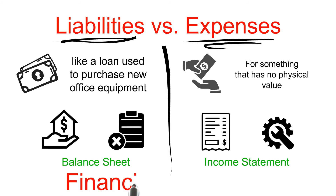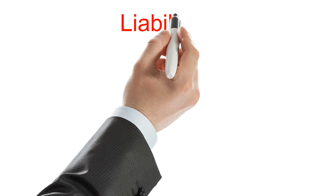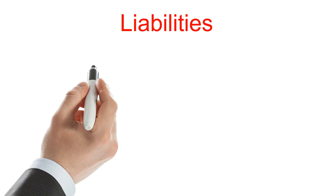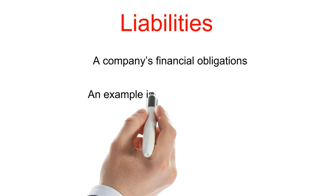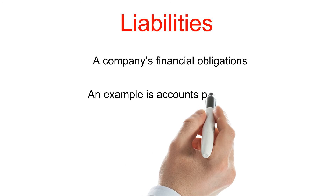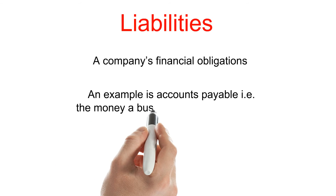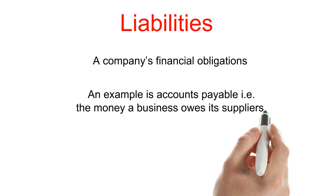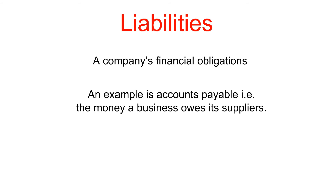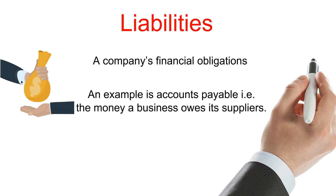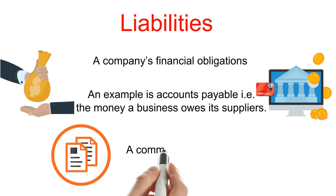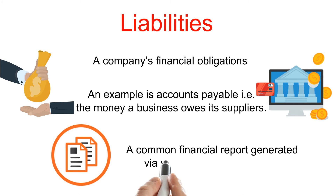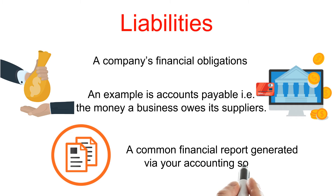Expenses are not found on the balance sheet but in an income statement. Both are financial statements. Liabilities in accounting are a company's financial obligations. An example is accounts payable — the money a business owes to its suppliers. Other liabilities include wages payable and loans owing.